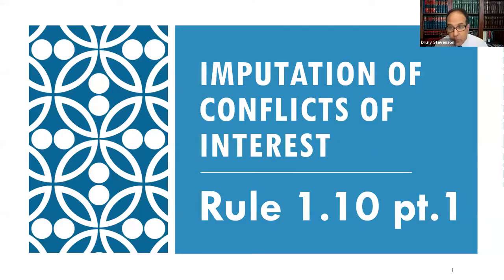This is a lecture for my professional responsibility class. We're going to be talking about Model Rule 1.10, which is about the imputation of conflicts of interest and screening out a lawyer from the rest of the firm to help resolve the problem of imputed conflicts. We're going to break this rule into two videos — going through the rule in this video and the ABA's official comments in part two.